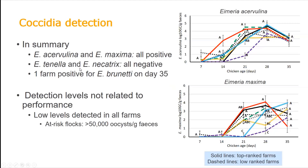We did not find Tenella or Necatrix in any of the eight flocks, and only one farm was positive for Brunetti at the end of the cycle. Based on that, detection levels were not related to performance — there was no evident link — probably because the levels were low by standard oocyst count per gram of feces thresholds, placing them at low risk for coccidiosis.